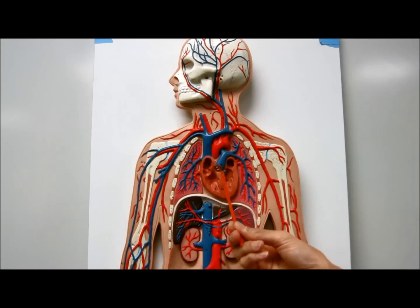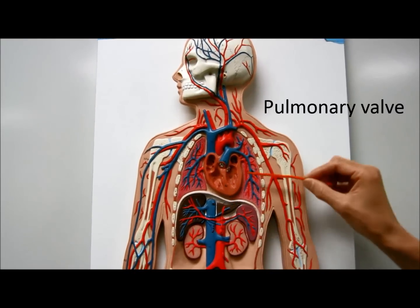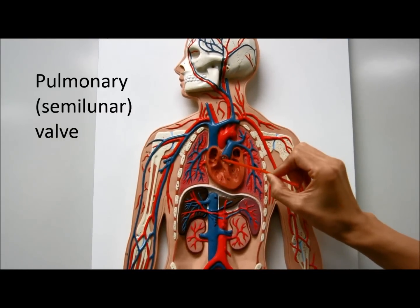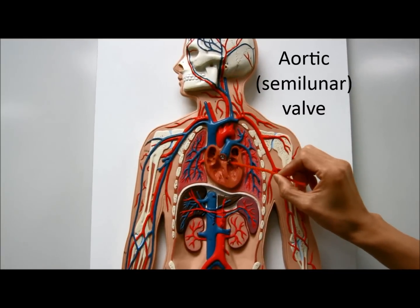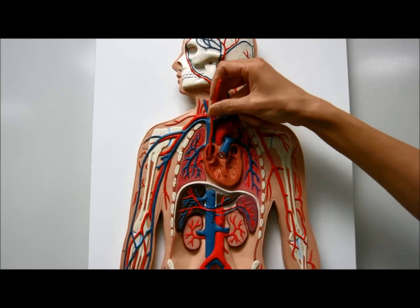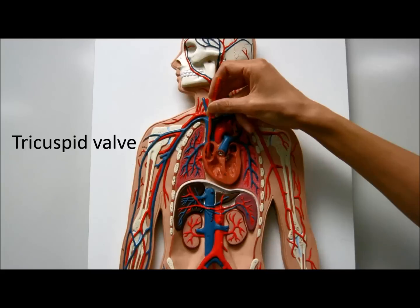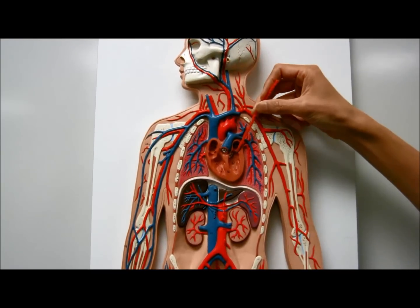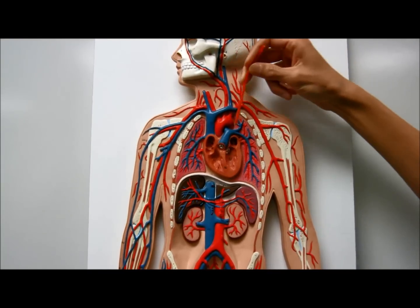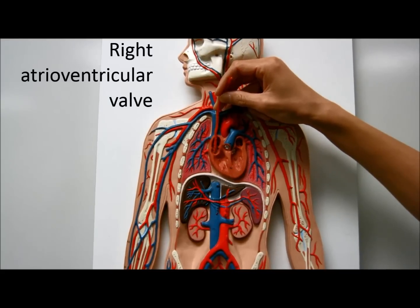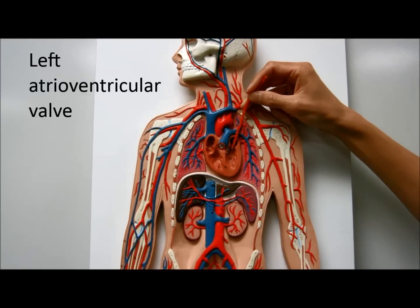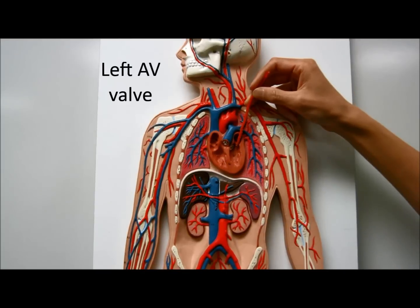Valves. This is the pulmonary valve. This is the aortic valve here — you can call it the pulmonary semilunar valve or the aortic semilunar valve. There's a valve here called the tricuspid valve, and there's a valve here called the bicuspid valve, also known as the right atrioventricular valve or the left atrioventricular valve. Right AV, left AV.